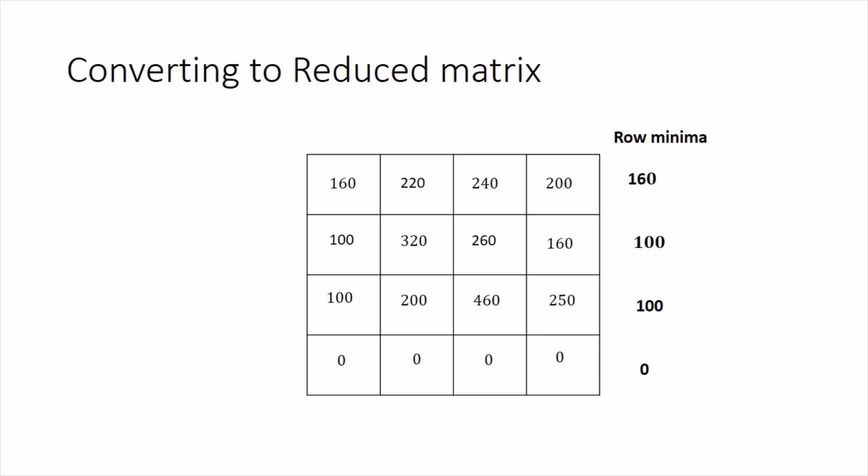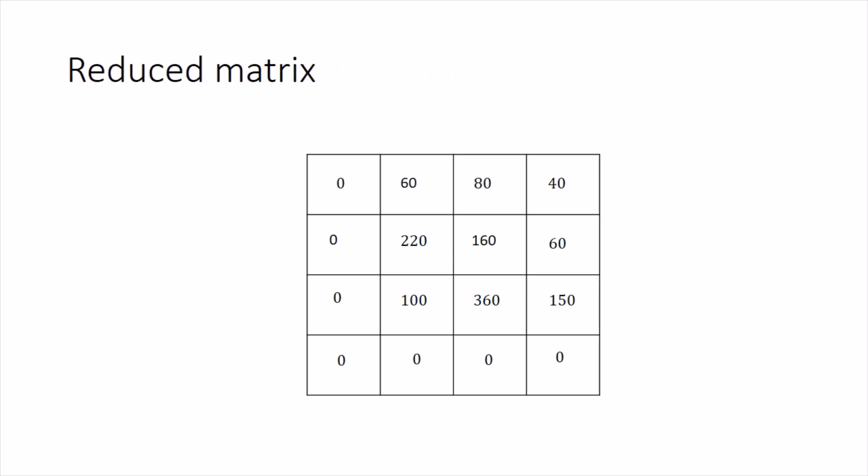Recalling the Hungarian method step by step: the first step is to convert the matrix to a reduced matrix. Find the minimum of each row, write it in front of it, and subtract that minimum from all entries in the respective row. You get an updated matrix where every row has at least one zero. Then check whether every column also has at least one zero — here every row and column has at least one zero, so this is the reduced matrix.